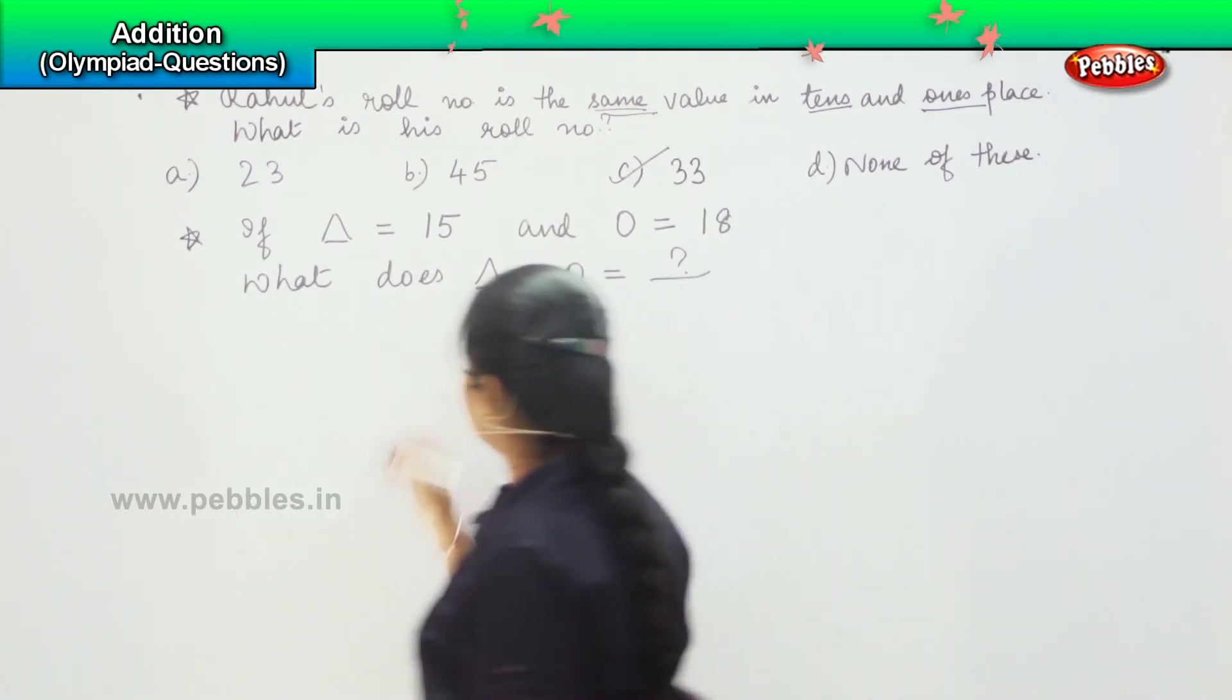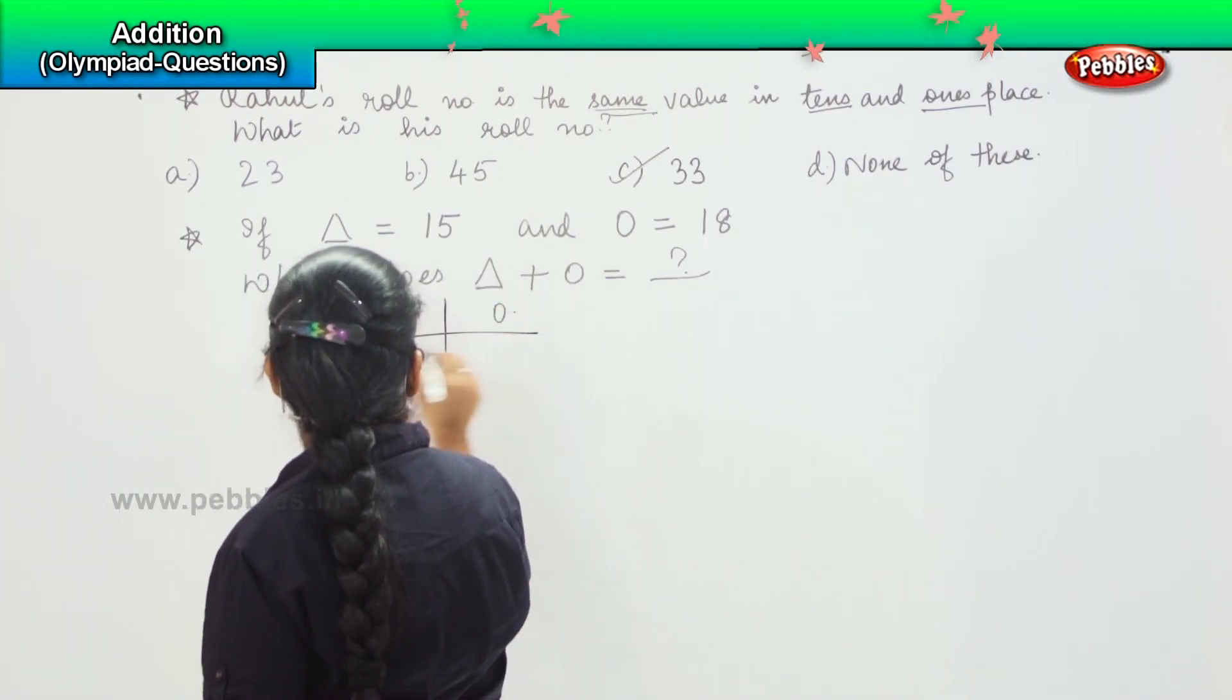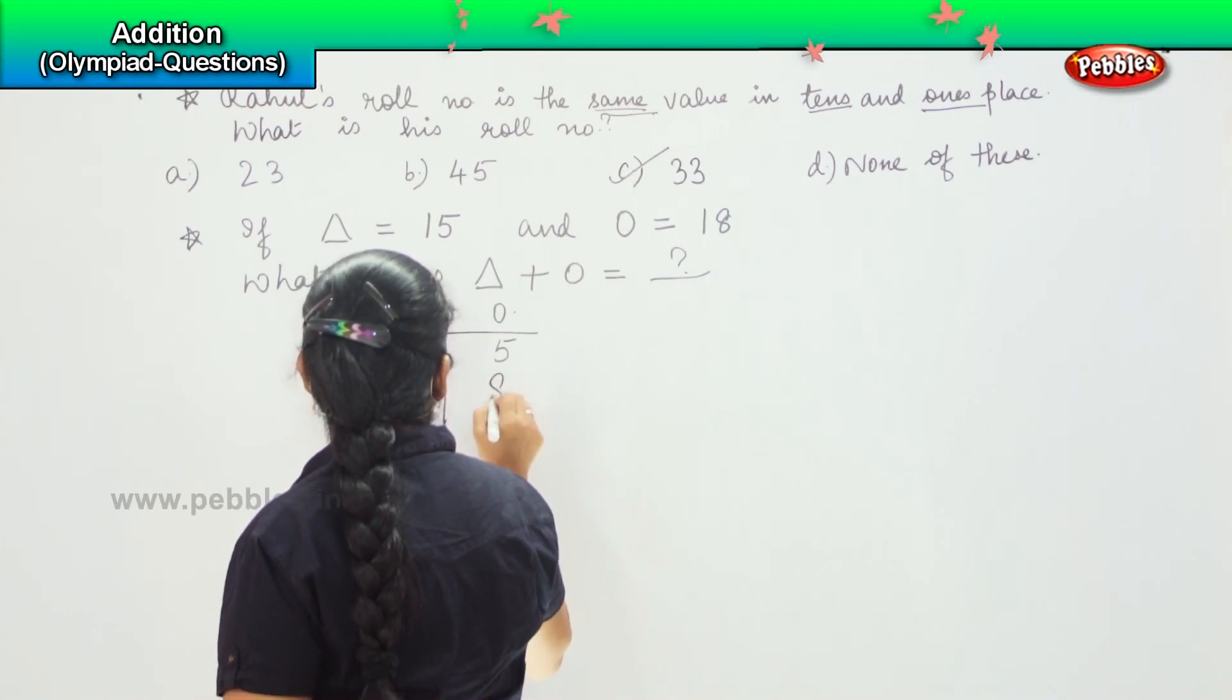What you need to do? Set up tens and ones columns. 15 can be written as 1 ten and 5 ones, and 18 can be written as 1 ten and 8 ones.